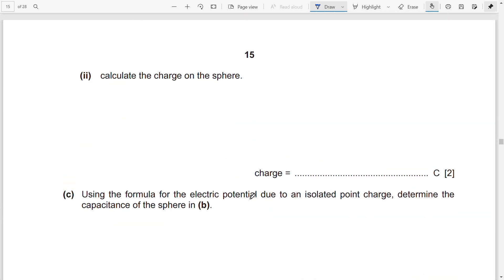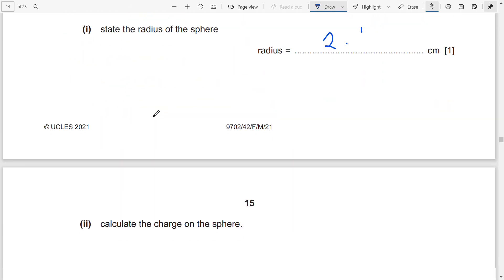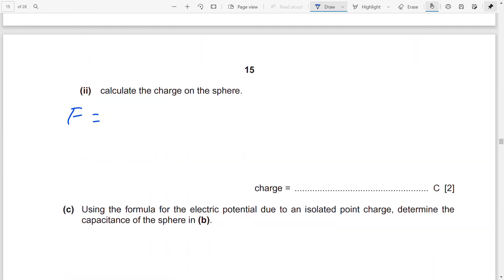Another question: calculate the charge on the sphere. How can you calculate the charge? You have E = 1/3. The formula we know is E = Q/(4πε₀r²). From here you will get charge Q = E × 4πε₀r². Put the value of E, that is 1.3 × 10⁵, and you'll get 6.4 × 10⁻⁵ coulombs. So 6.4 × 10⁻⁵.